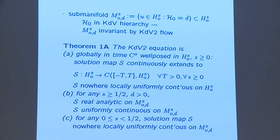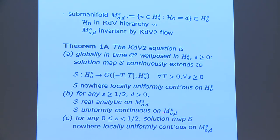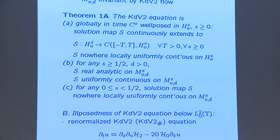However, this map is nowhere locally uniformly continuous on HS0. If you give me any open non-empty set U on HS0 and restrict S to this set, it's not uniformly continuous. If S is bigger or equal to one-half and D is strictly positive, then this map actually is uniformly continuous on this manifold. But if S is between zero and one-half, the solution map S is nowhere locally uniformly continuous, even if I fix the L2 norm.